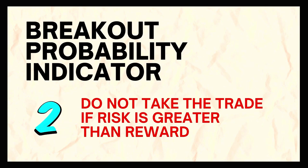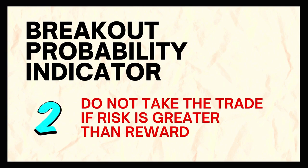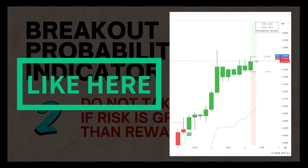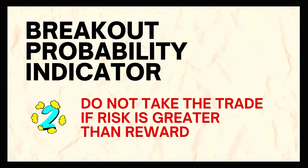Number two: your stop loss will be at your opposite bias percentage line, and your take profit will be at your market bias line. Do not take the trade if your stop loss is higher than the profit target — wait for the next candle or move on to the next asset. If both the stop loss and profit target are equal, still take the trade. You will still be profitable because you will win more trades than you lose.